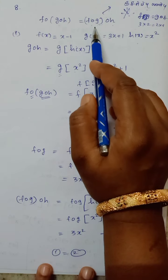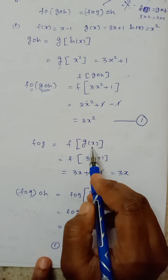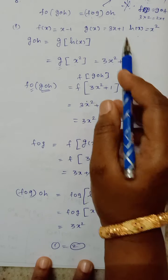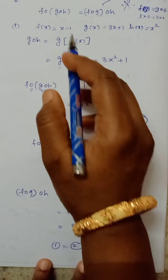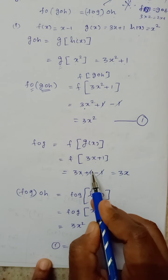Then the right hand side is equal to f∘g. So f of g of x. So g of x is 3x plus 1. So x minus 1.